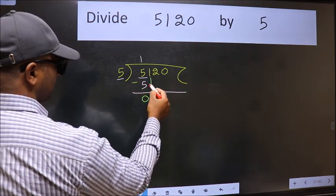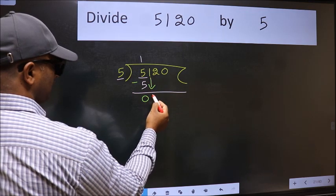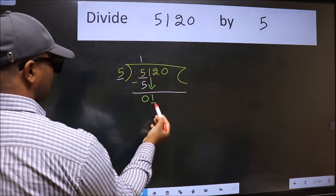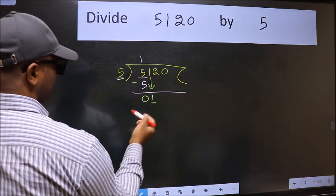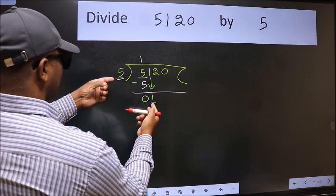After this, bring down the beside number. So 1 down. Now here we have 1 and here 5. 1 is smaller than 5.